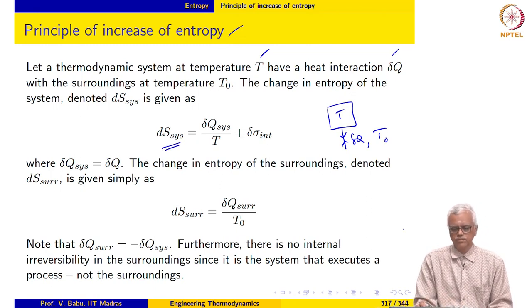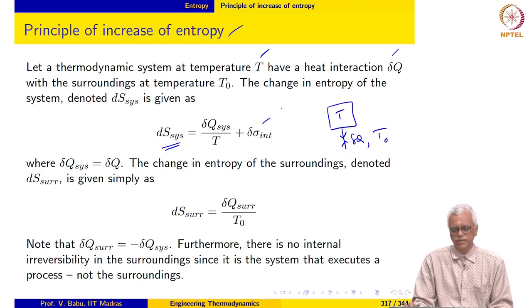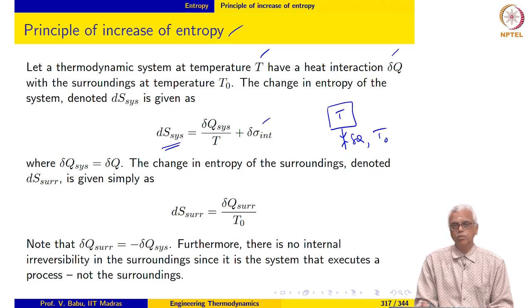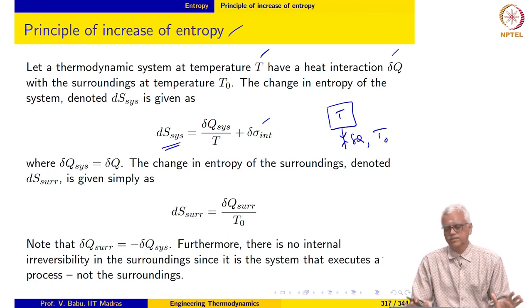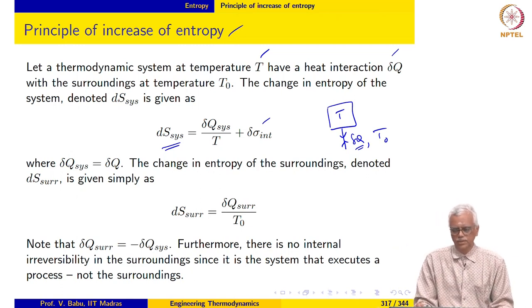The change in entropy of the system as a result of this process is dS equal to delta Q over T plus delta sigma int, which is the entropy generation due to internal irreversibility in the system. The change in entropy of the surroundings, denoted dS surroundings, is given simply as dS surroundings equal to delta Q surrounding over T naught. There is simply a transfer of entropy from the system to the surroundings or vice versa. The surroundings are not executing a process.